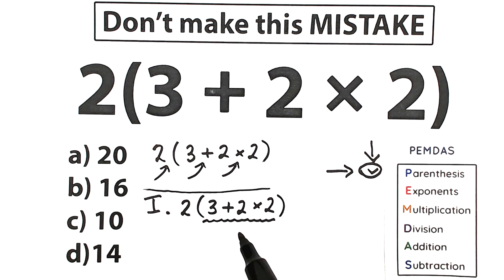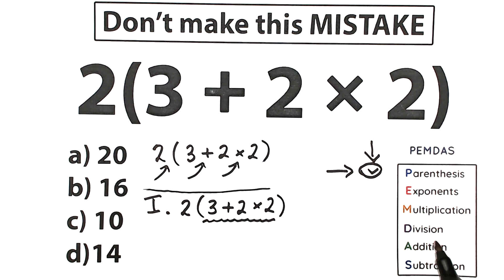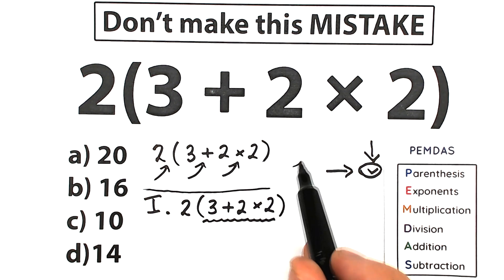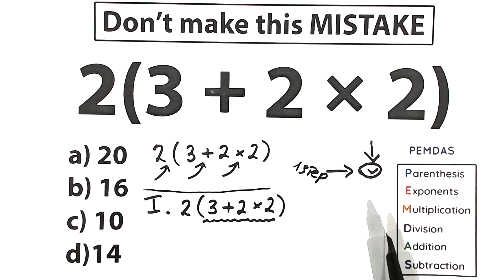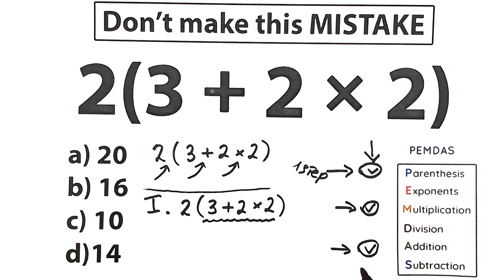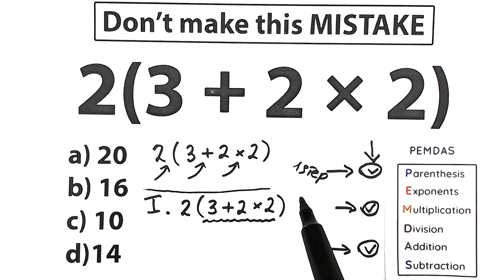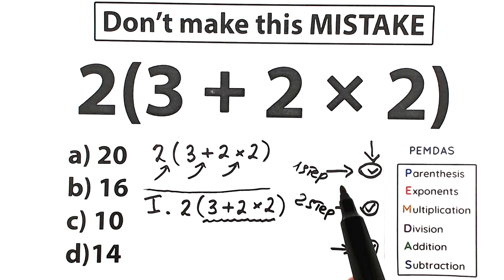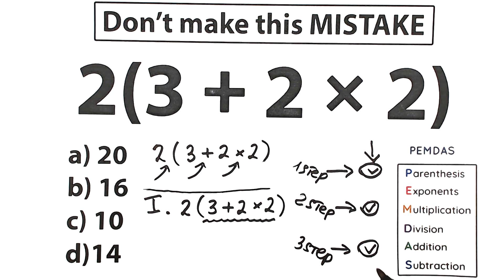Inside parentheses we have addition and multiplication, and we need to know which comes first. Looking at the PMDMC order of operation: multiplication is the second step and addition is the third step. We go from top to bottom — multiplication has higher priority than addition, so we must multiply first. Multiplication is always before addition according to this order.